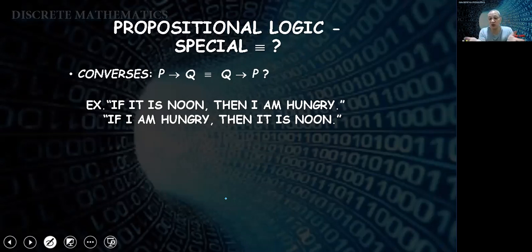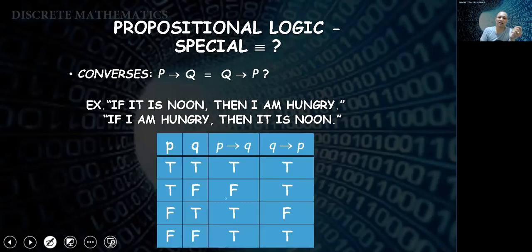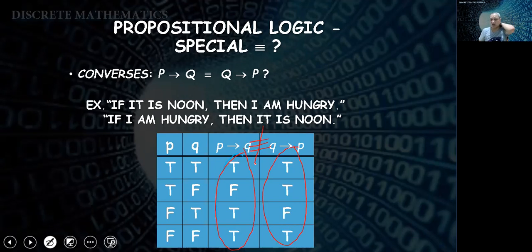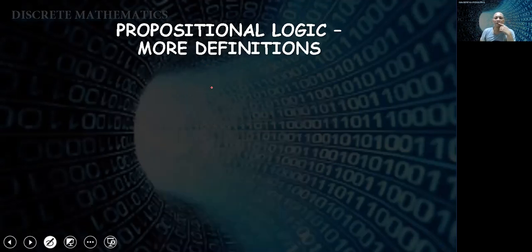We can prove these using truth tables. For the converse — checking 'if P then Q' against 'if Q then P' — the truth table shows they are not exactly the same. The third row differs, confirming they are not equivalent. Please try to prove the other propositional logic special equivalences on your own time.